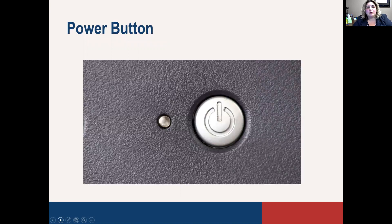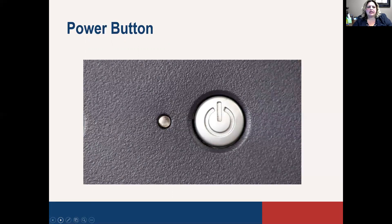This is where you will turn the computer on. You'll see a power button — it usually has that half circle with a line through it, and you've probably seen similar power buttons on other electronic devices. When it's turned on, usually there's a light to the side that will be lit up so that you know it is on and not just in a standby or sleep mode.